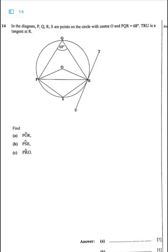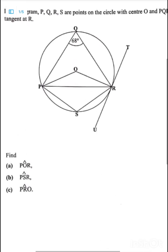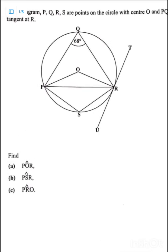So we can see that there is a tangent there at R. Okay. So now, find POR, find PSR, and find PRO. So let me just enlarge this diagram a bit, so that you see what is actually happening here.